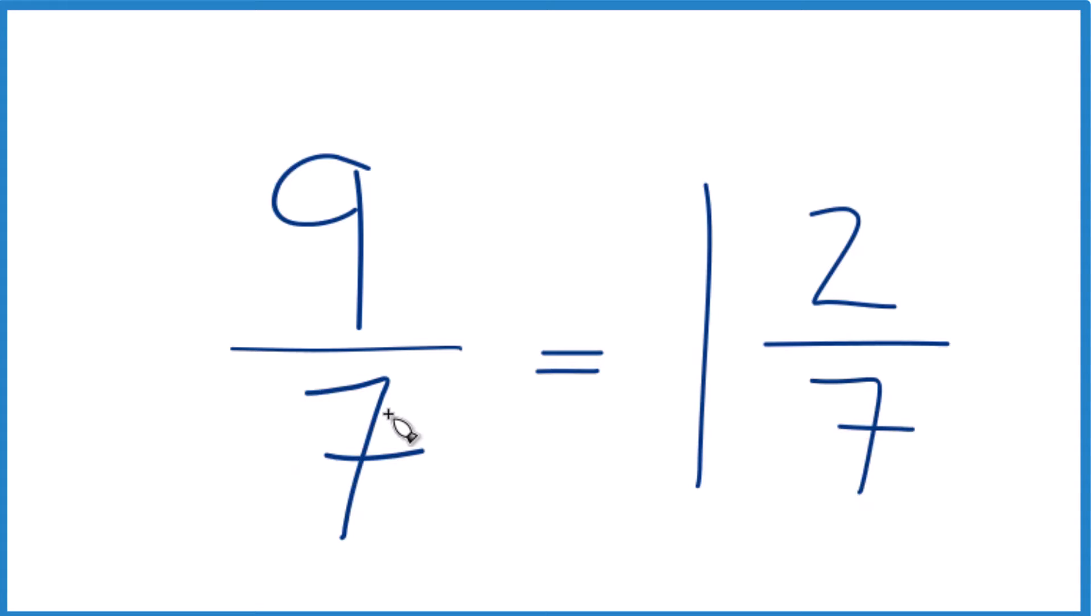So that's how you change nine-sevenths, the improper fraction, to a mixed number. This is Dr. B, and thanks for watching.